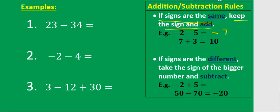If the signs are different, take the sign of the bigger number and subtract. For example, negative 2 and positive 5 have different signs. The bigger number is 5, so you take the positive sign and subtract: 5 minus 2 is 3. Similarly, if you have 70 negative and 50 positive, signs are different — 70 is bigger, so you keep the negative from 70 and subtract: 70 minus 50 is 20, giving negative 20.